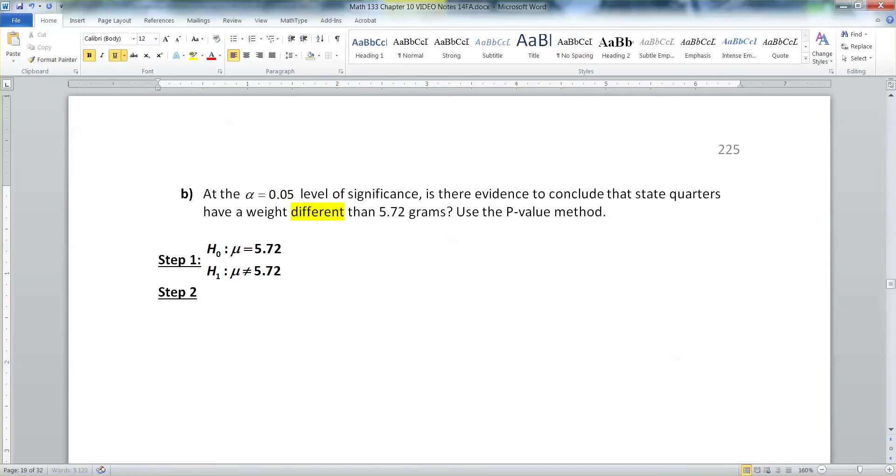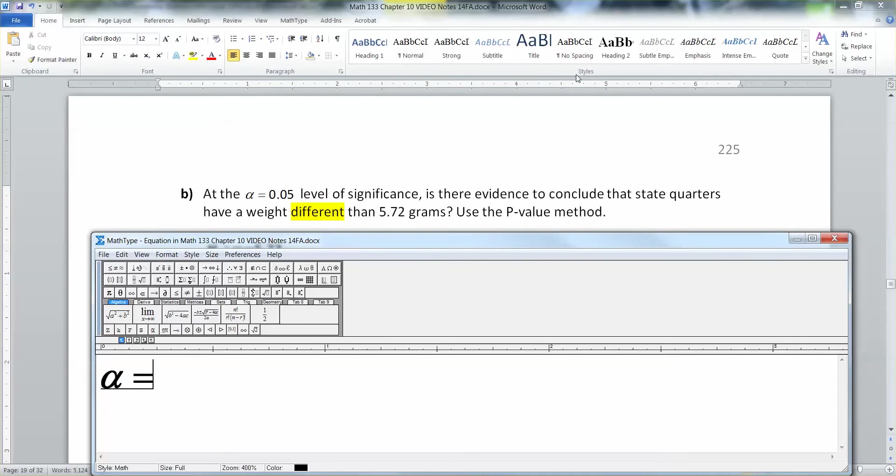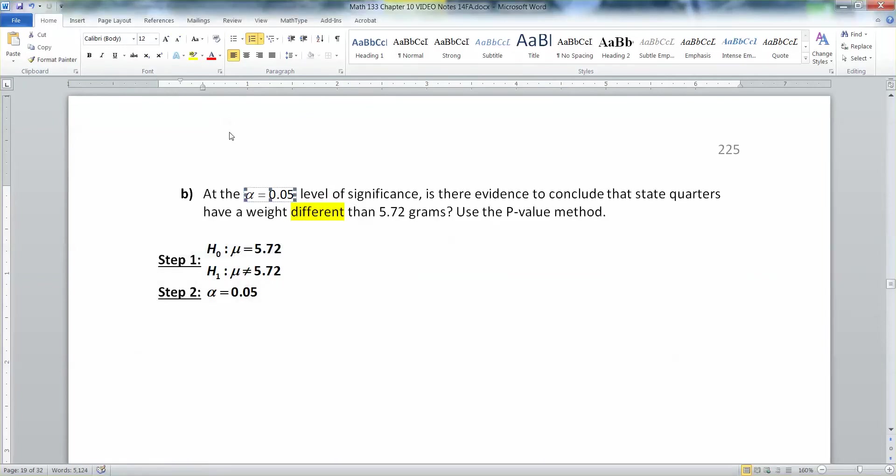All right, then step two, alpha, everybody's favorite step, because alpha is given in the problem as 0.05, right here. Once I give the level of significance, that's your alpha. So step one and two are done.